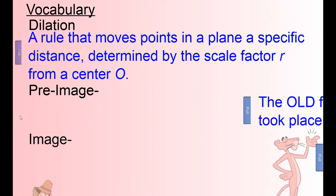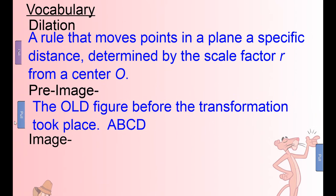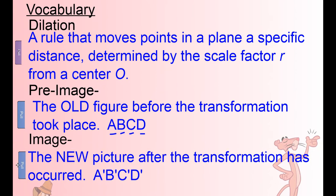Pre-image: the pre-image is the old figure, the original, before the transformation took place. Typically the letters will be like A, B, C, D. In contrast, the image — which is the after — is the new picture after the transformation. When we label the corners or edges, it's like A prime, B prime, C prime, D prime. Those little marks are announced as 'prime.' Kind of like Transformers Optimus Prime — A prime, B prime.